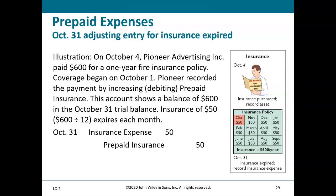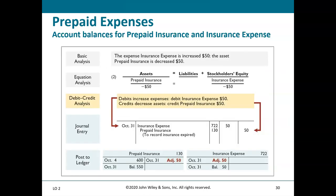Again, here is the analysis: look at the accounting equation, determine debits and credits, record the journal entry, and post to the ledger. One important note: all adjusting entries are dated the last day of the month. Since these examples deal with October, all journal entries are dated October 31st.